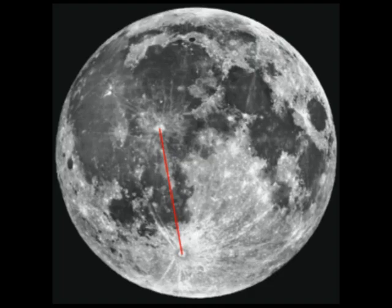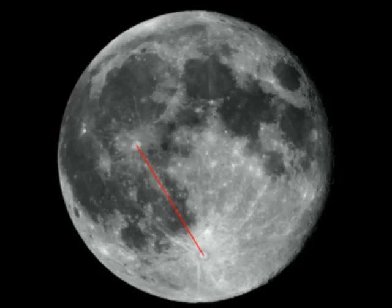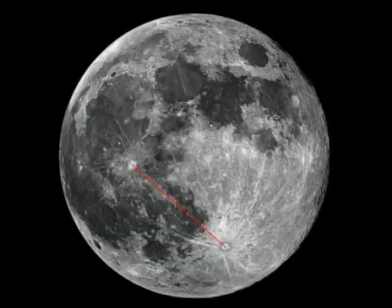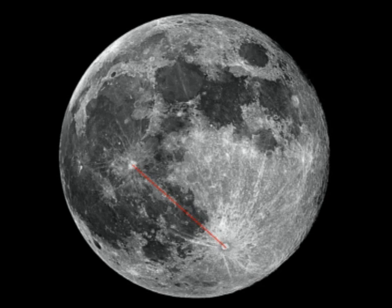This is explained quite simply when we consider that the moon rises in the east, travels across the sky, and sets in the west. In the northern hemisphere the moon will cross over in the southern sky, and in the southern hemisphere the moon will cross over in the northern sky.